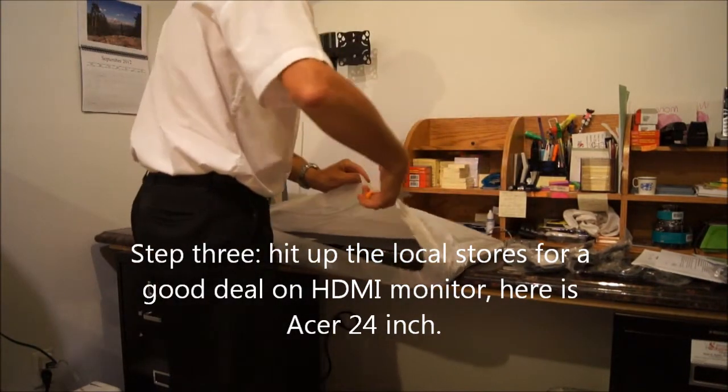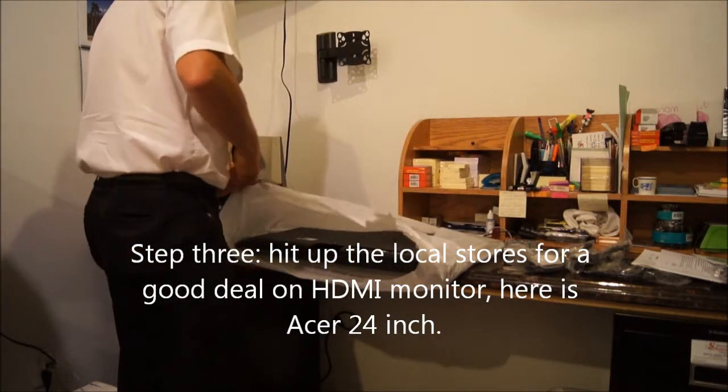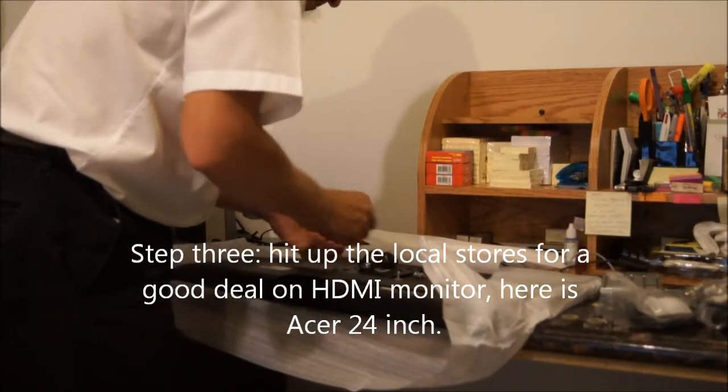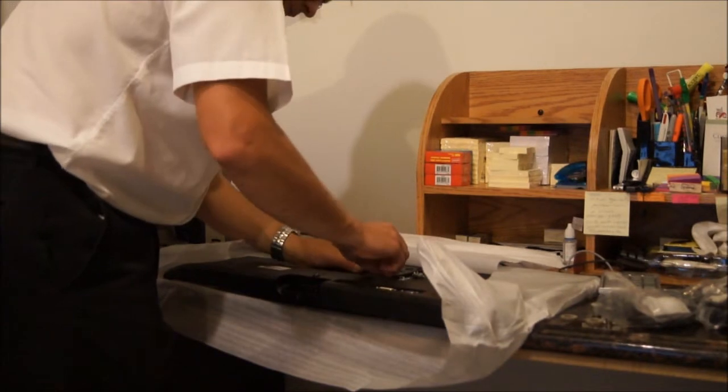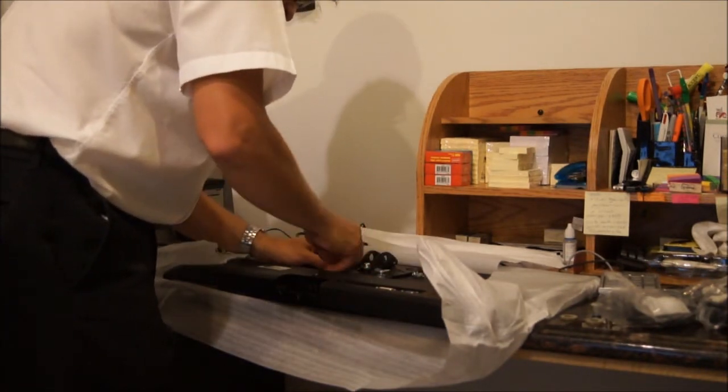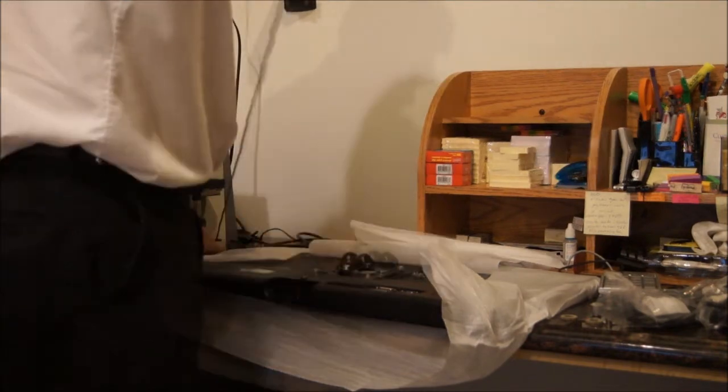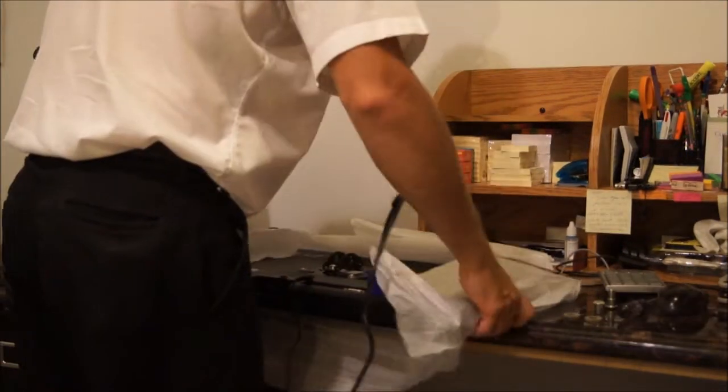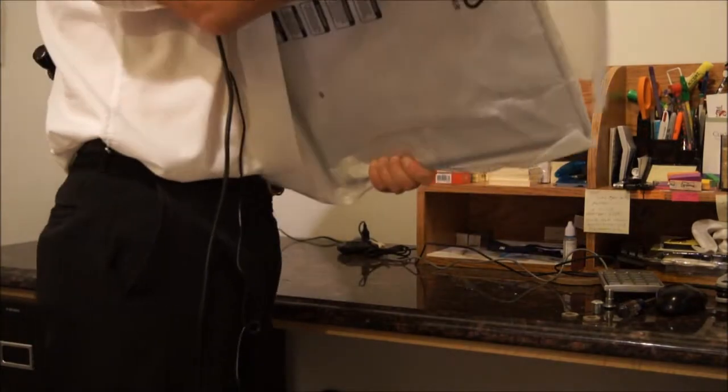So basically, get yourself a monitor. On the back of the monitor, most of them have standard mounts, so we're just going to put the screws in for this mounting plate that we picked up in the store. We're going to plug in our HDMI and our power cable, and we're going to basically hang this monitor. Pretty much a simple process.